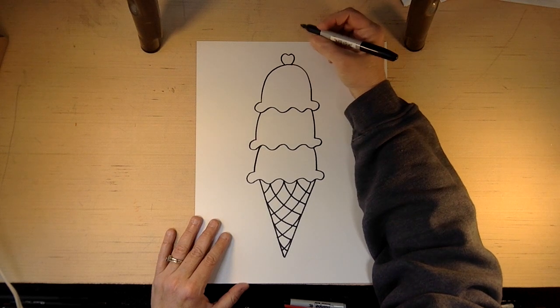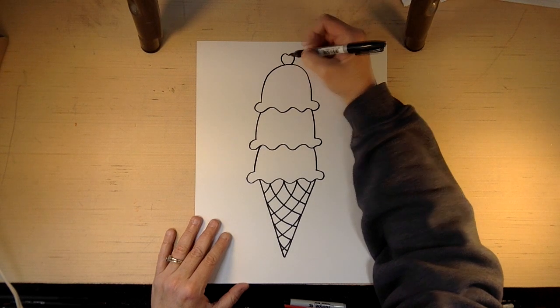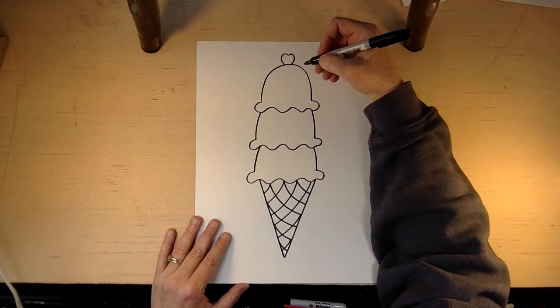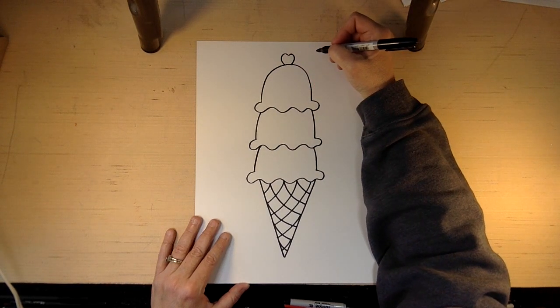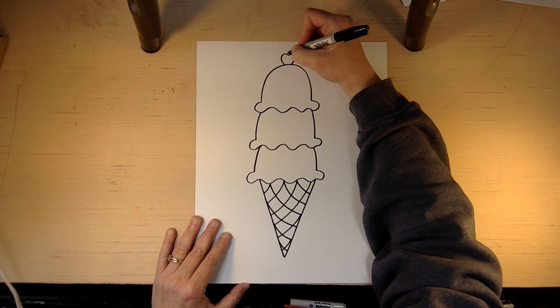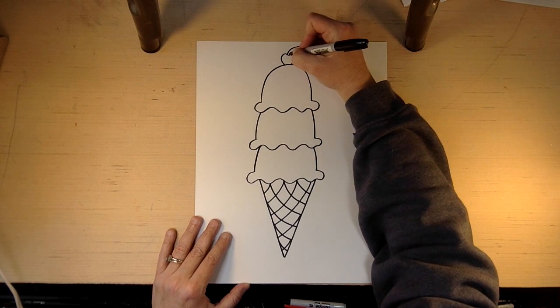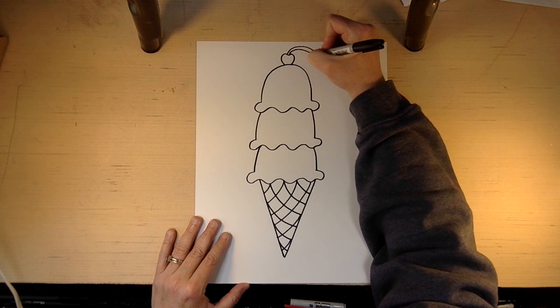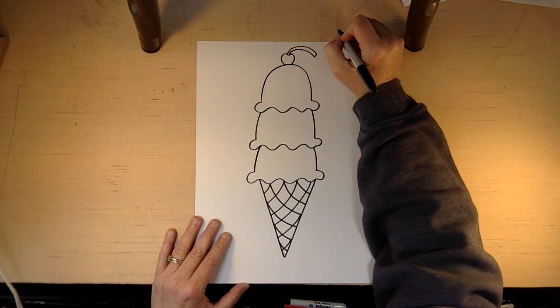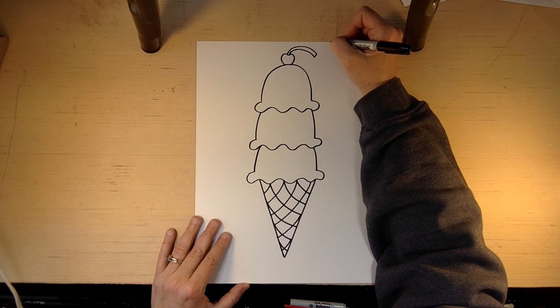And then you come around this side. And you don't want to see the bottom because that's kind of stuck in the ice cream. So in this dip, we're going to do our stem, like that. So it looks like a pretty yummy cherry to me.